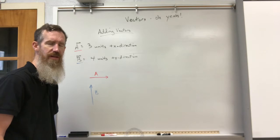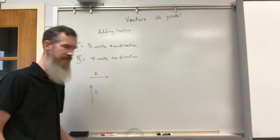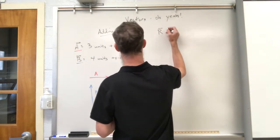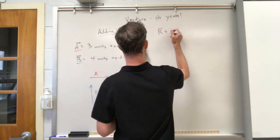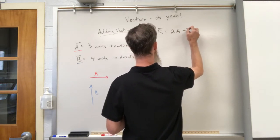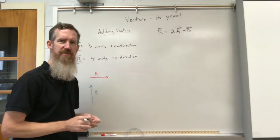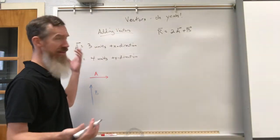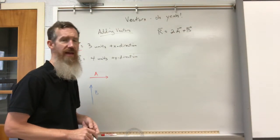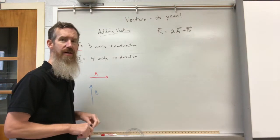Sometimes you'll get statements like this: what's the resultant of 2A plus B? Now you're not going to say, like algebra, two times three is six plus four is ten. That's not the answer. That's not what they're asking. You can't do that because these vectors are not in the same direction.